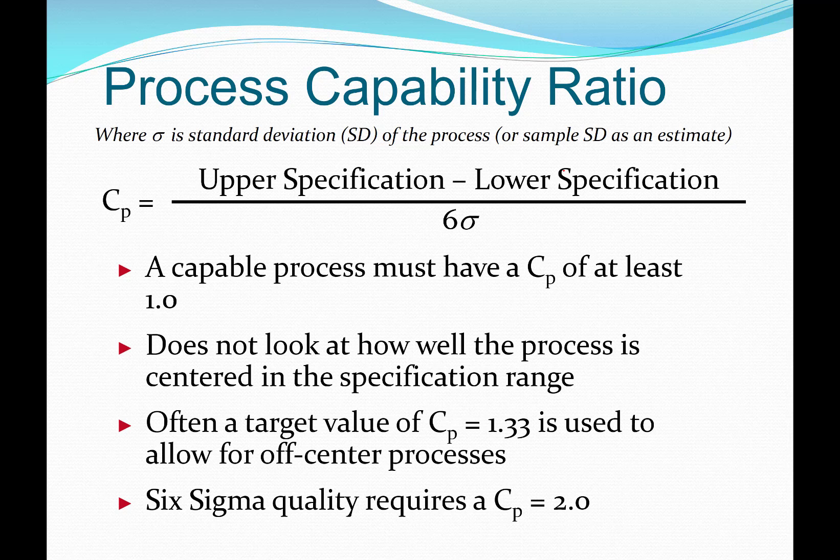Sigma is the standard deviation of the process, or it could be the sample standard deviation as an estimate. A capable process must have a capability ratio of at least one. The capability ratio does not look at how well the process is centered in the specification range. Often a target value of C sub p equal to 1.33 is used to allow for off-center processes. Six sigma quality requires a capability ratio of two.